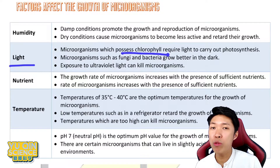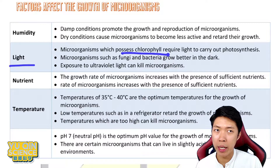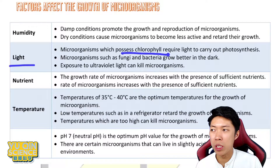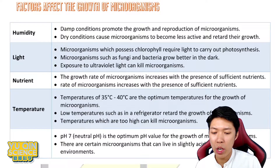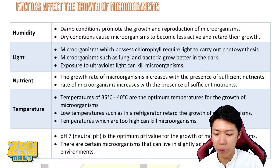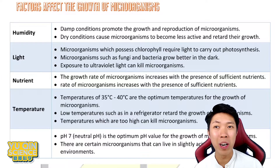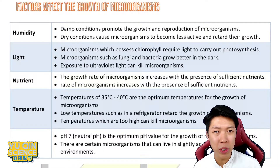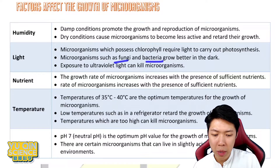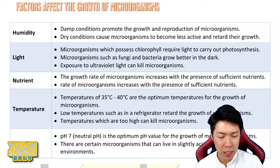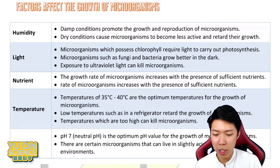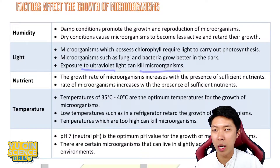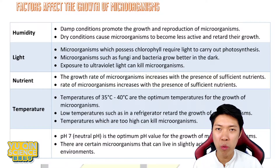Light — only those with chlorophyll, for example algae, which require sunlight to carry out photosynthesis, will like light conditions. Fungi and bacteria grow better in the dark, because sunlight can actually kill them — UV can kill microorganisms. So that's two different cases here.